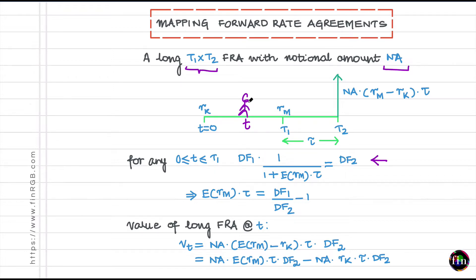Based on the spot rates which you observe at time T, DF1 is known to you, DF2 is known to you. Discount factor between T1 and T2 I can write it as 1 over 1 plus the best guess for this interest rate scaled by tau. This equation then very simply can tell me what the best guess of my RM is. I can work out just by twisting this equation around that expected value of RM times tau is actually DF1 by DF2 minus 1.